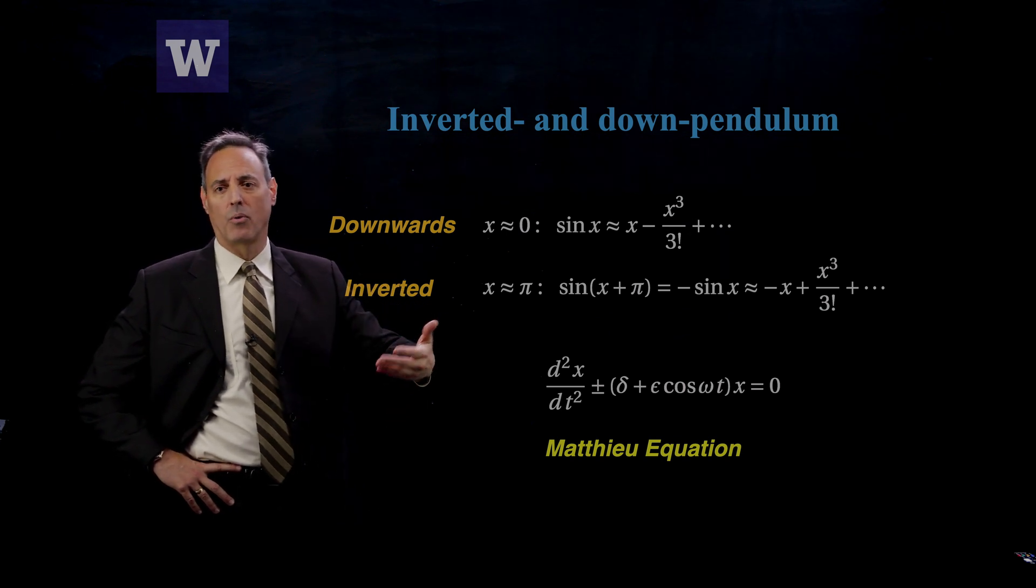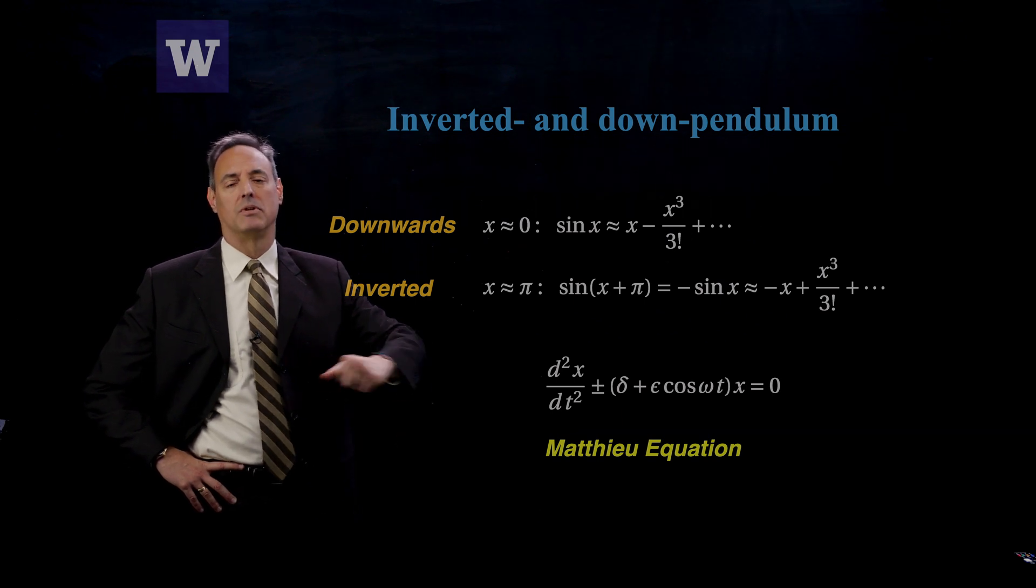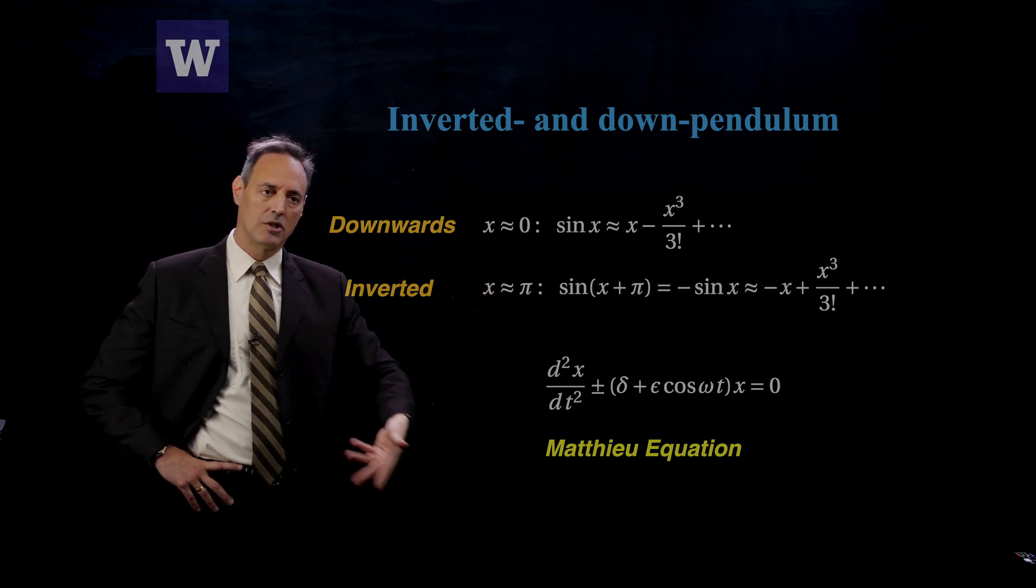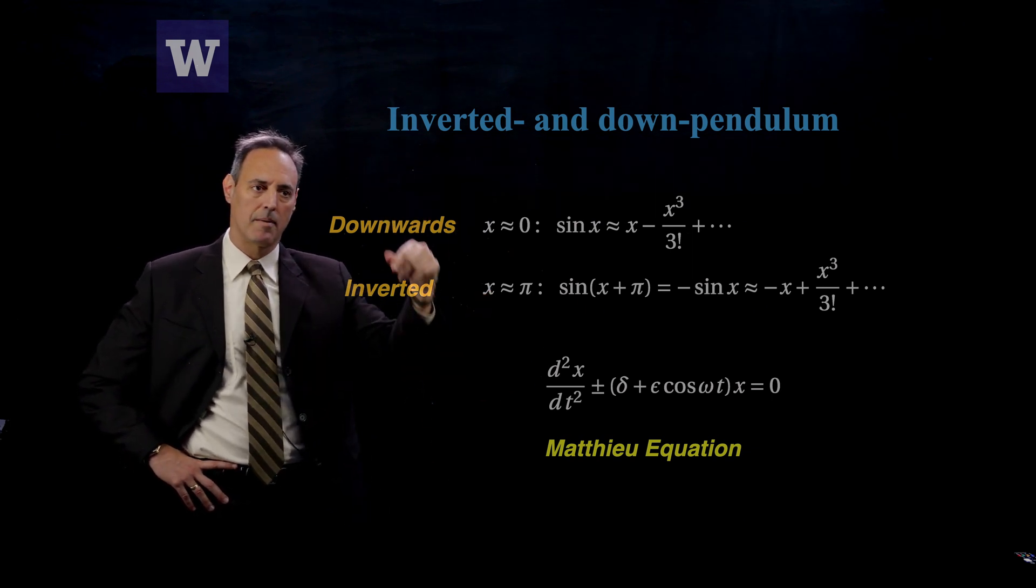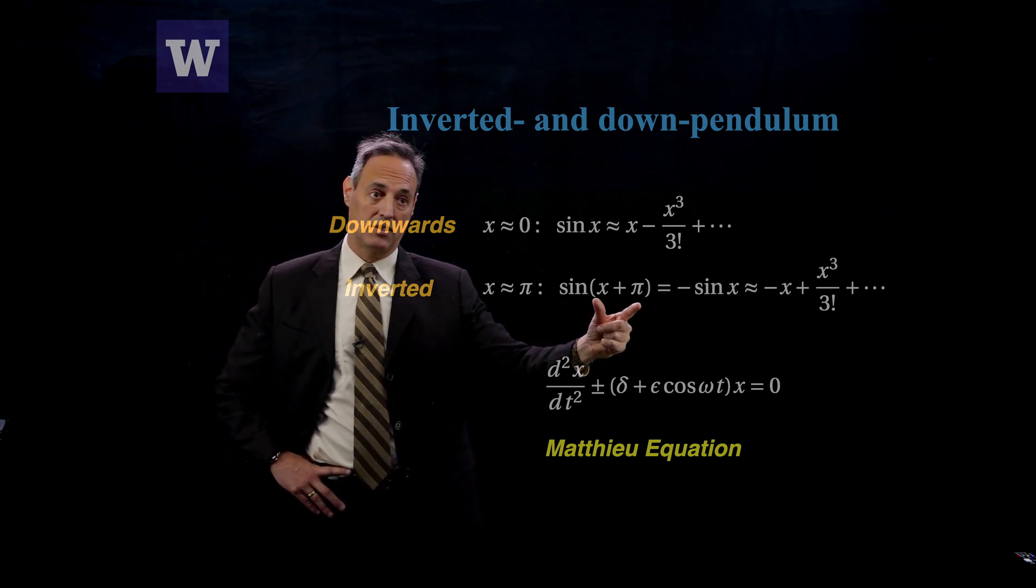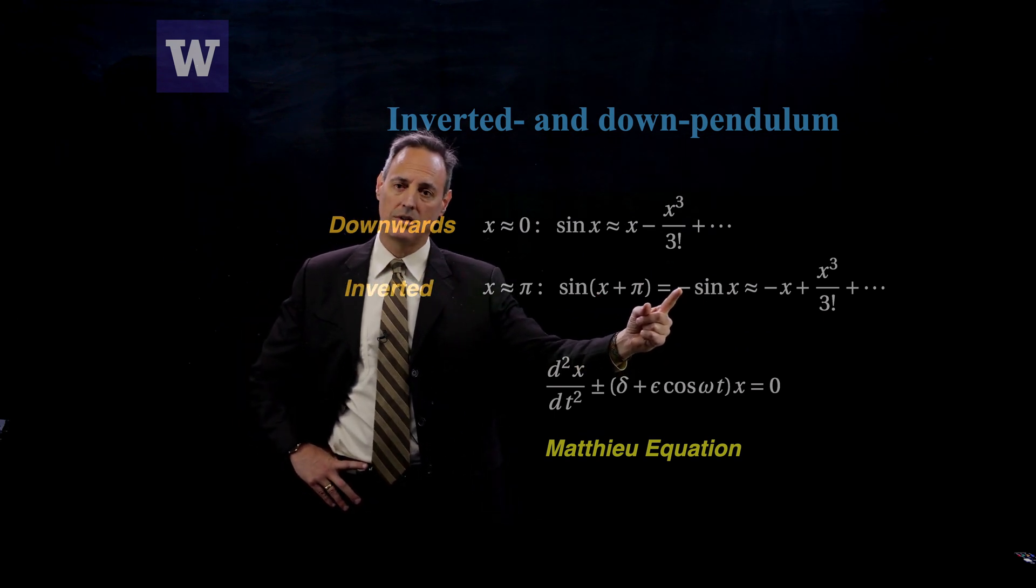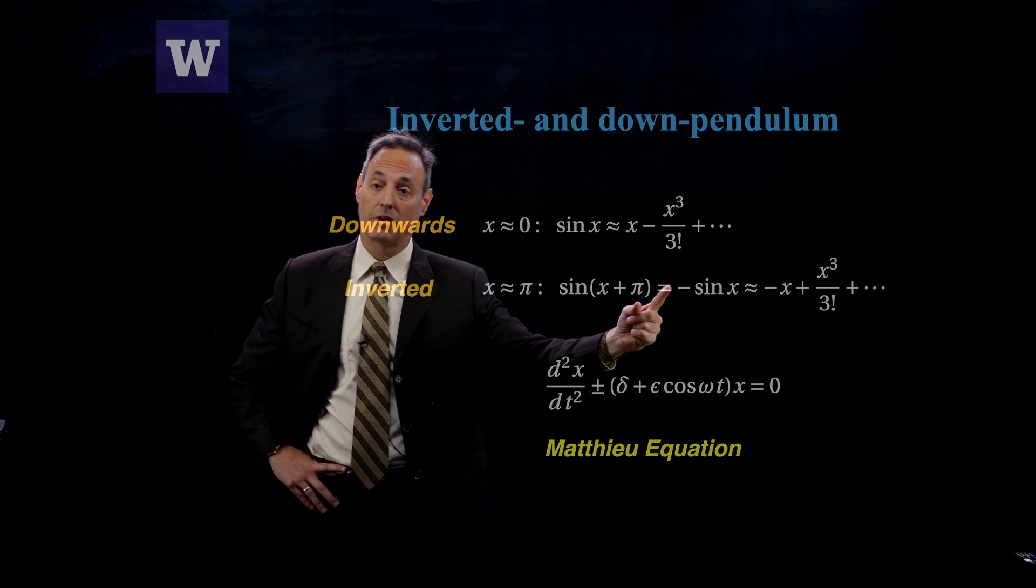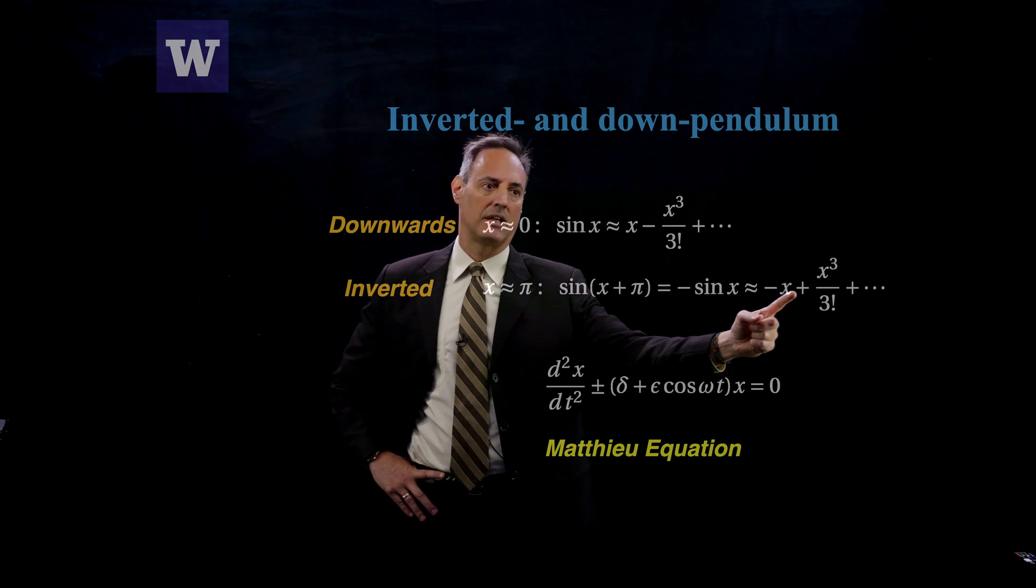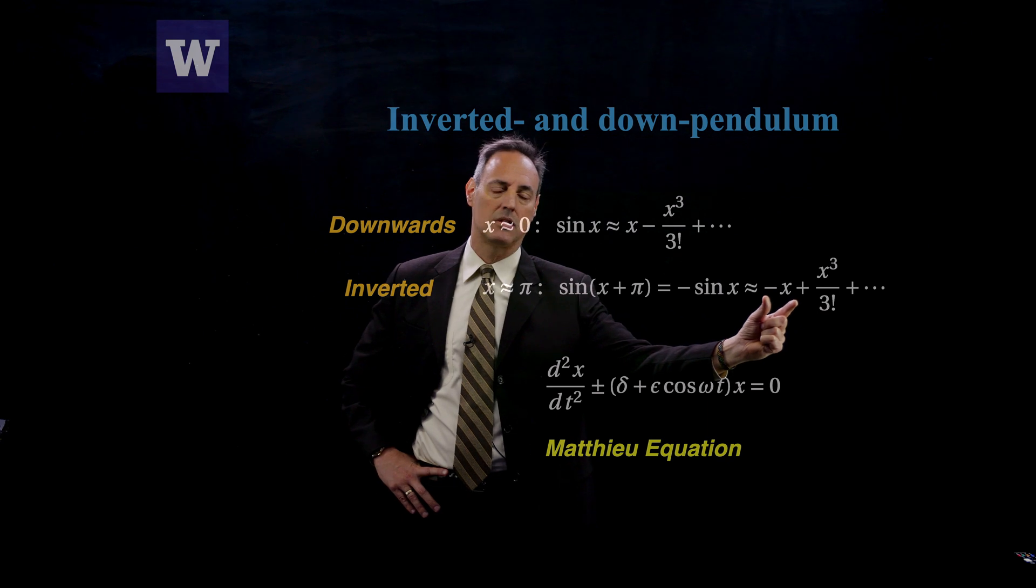Now that's kind of a boring case. We already know what happens there. The downwards pendulum is stable in that position. The inverted pendulum is when x is equal to pi, so now you're pi up, you're facing straight upwards. So this sine of x plus pi, you just use your trig identities to show that's like negative sine x, which when you do the Taylor series expansion of this for small amplitude fluctuations near the top is minus x plus x cubed. Notice the sign change. That's the big difference.